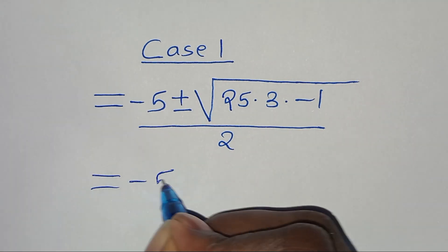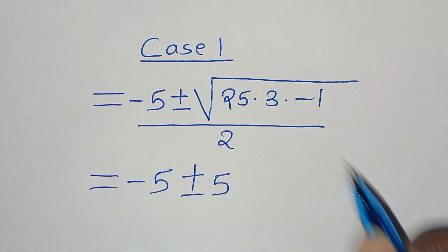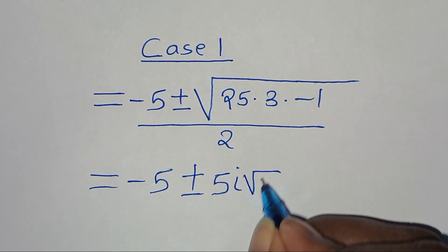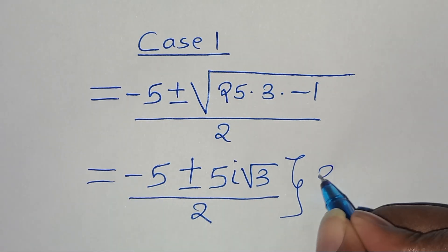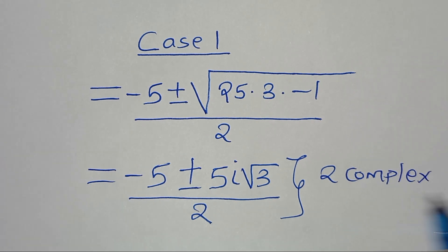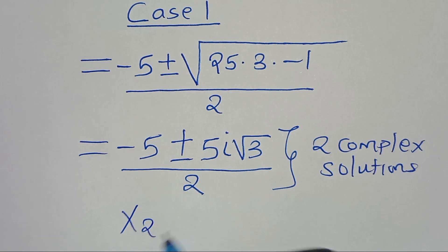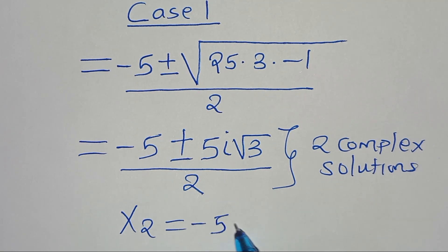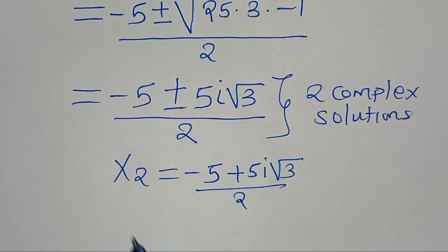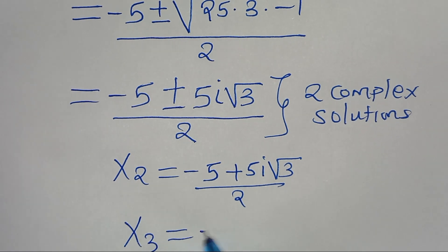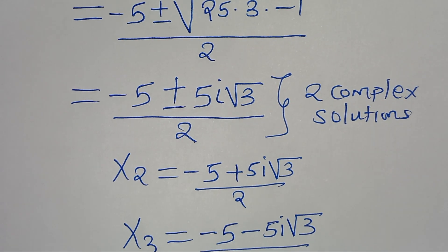Therefore we have minus 5 plus or minus 5i square root of 3, divided by 2. So we have two complex solutions: x2 equals minus 5 plus 5i square root of 3, divided by 2; and x3 equals minus 5 minus 5i square root of 3, divided by 2.